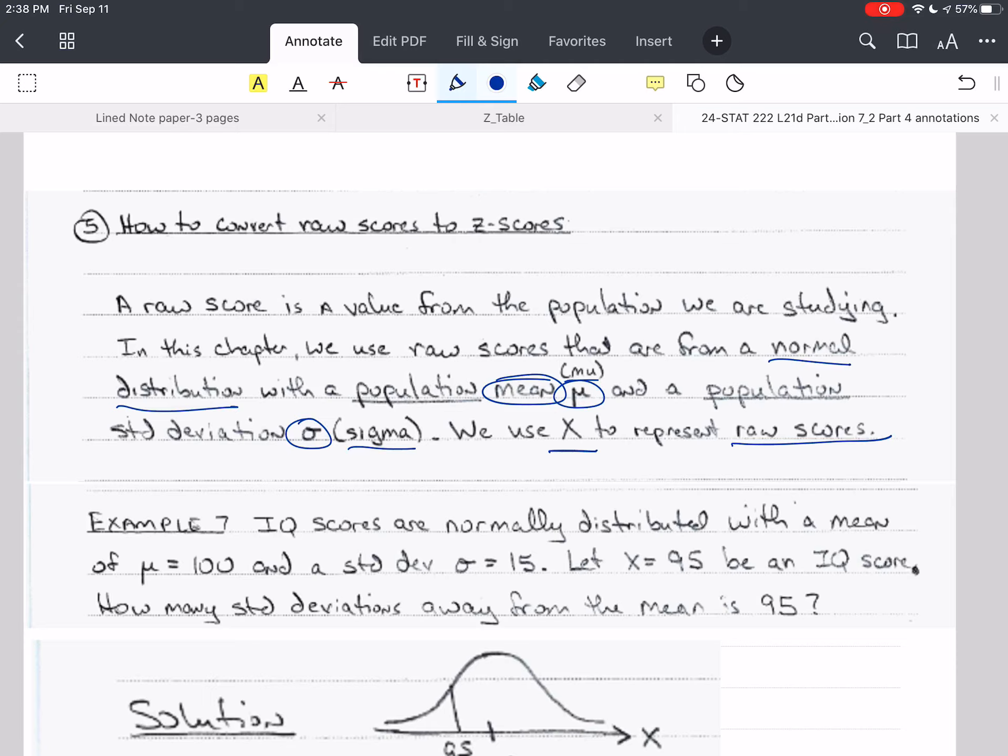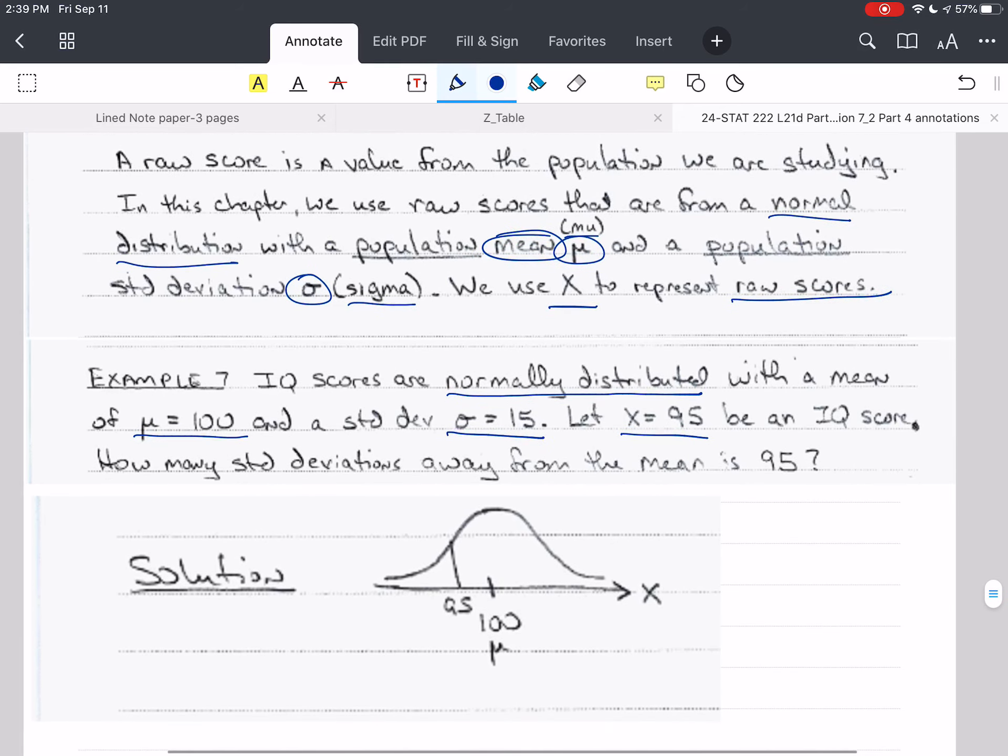And so all these raw scores will be from some normal distribution with some mean mu and some standard deviation sigma. And we use capital X most of the time to represent these raw scores. So let's do an example. IQ scores are normally distributed with a mean of 100, and that is true as well. They're designed that way. I'm not sure what the actual standard deviation is, but we'll pretend that it's 15.